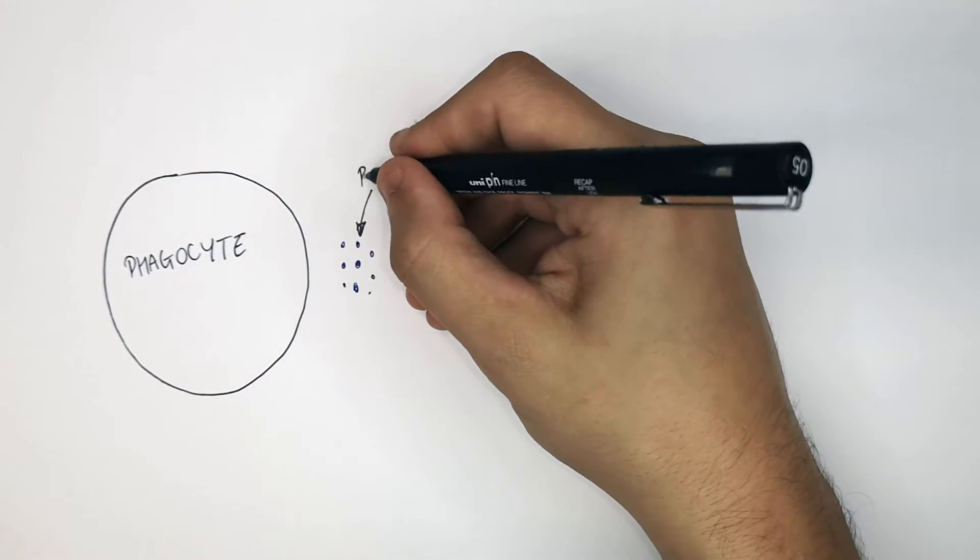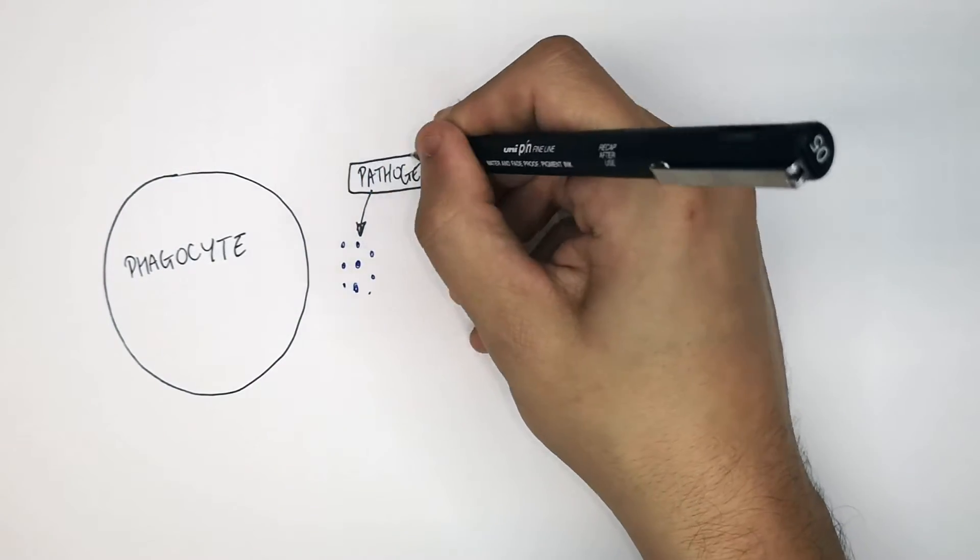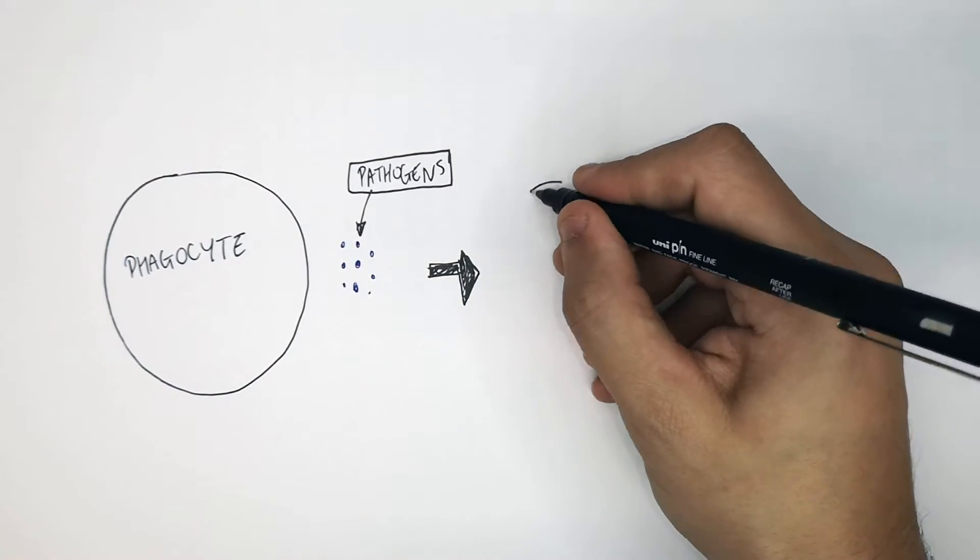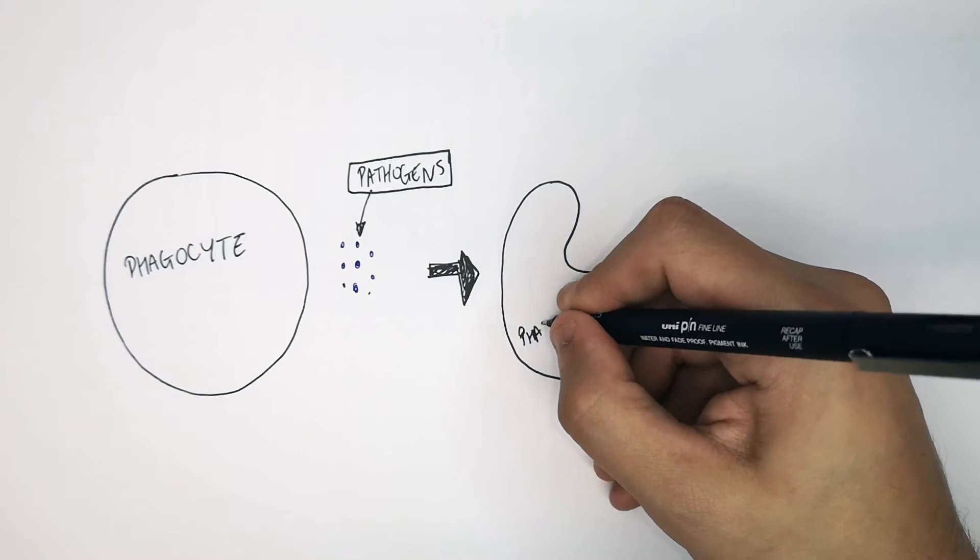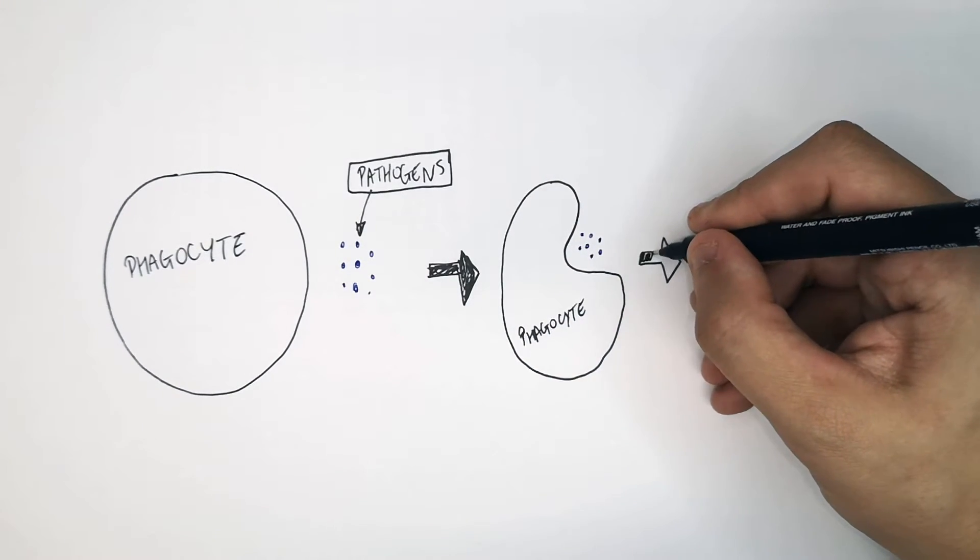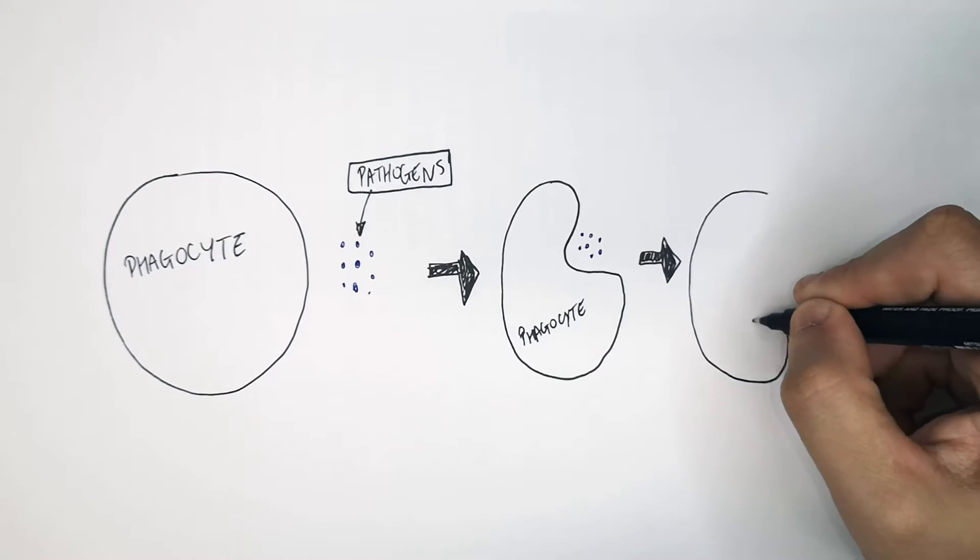What a phagocyte does is it will engulf pathogens. So when there are pathogens that need to be removed from the body, a phagocyte is going to engulf them. It does not do what a lymphocyte does, which produces antibodies. A phagocyte will engulf, not eat, the pathogens by phagocytosis.